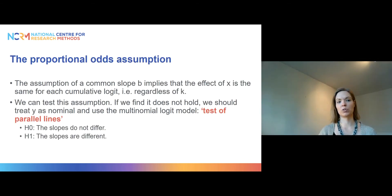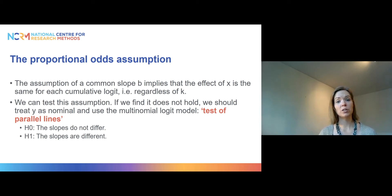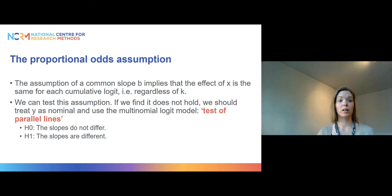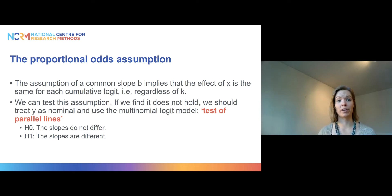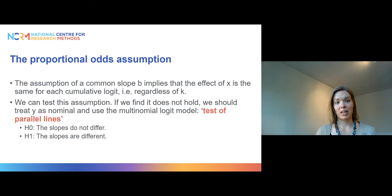So what is this proportional odds assumption? Whenever we run an ordinal model we assume that there is a common slope for the effect of any of the explanatory variables included in our model that applies for each of the cumulative logits that we are fitting. That is seen by the fact that you only have one set of odds ratios when you run an ordinal model. If you compare that to a multinomial model, which has different sets of odds ratios for every equation, you can see that the ordinal model is very different — you only have one set of odds ratios and the only thing that changes is the intercept.